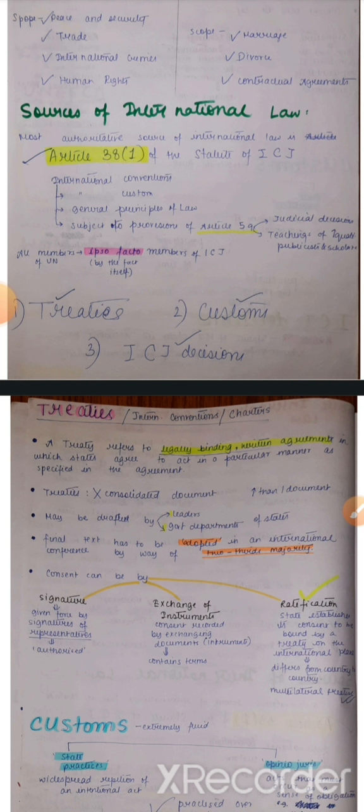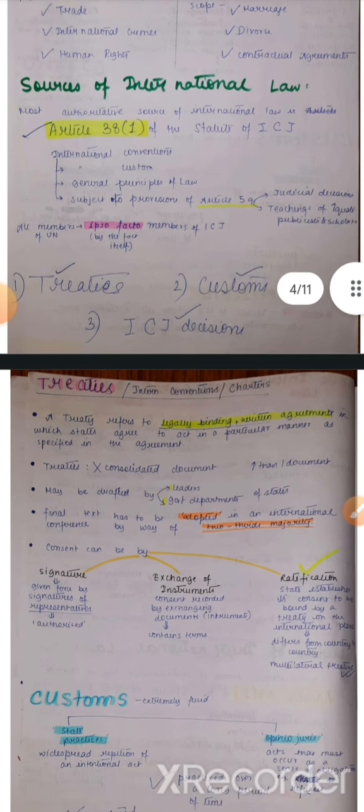Article 38 sub-clause 1 kehta hai ki jabhi ek problem or dispute arise hoga between parties, tab as sources we can draw upon international conventions — matlab woh treaties mein hum agree karte hain, kuch particular law ki woh hum pe applicable hai — wohi sab kuch ko kehte hain international conventions.